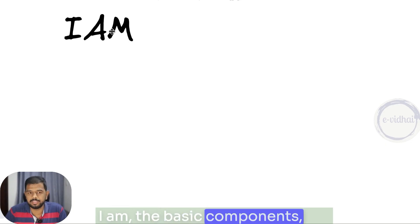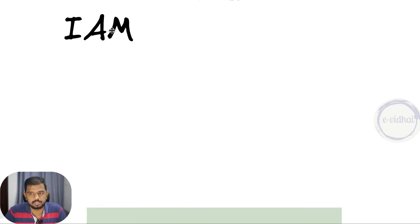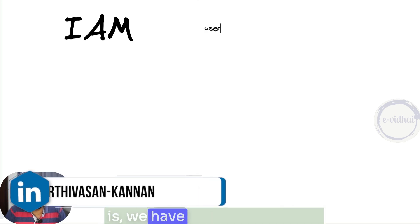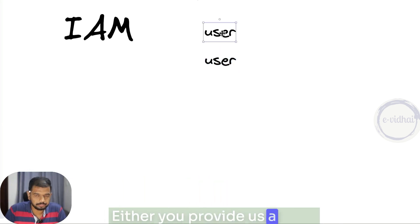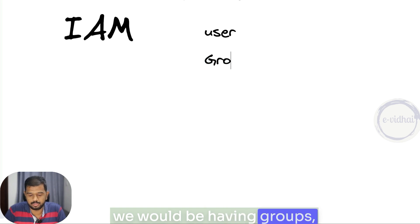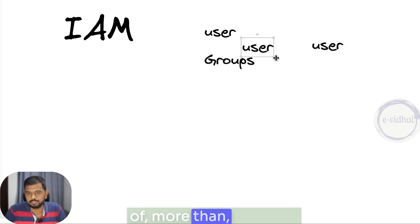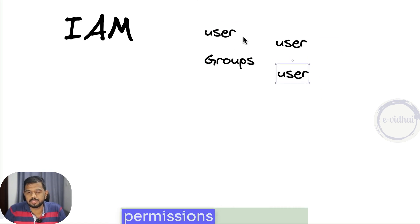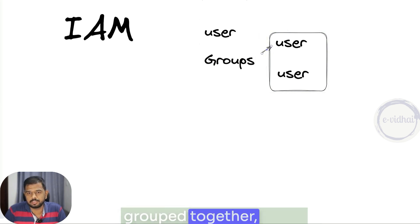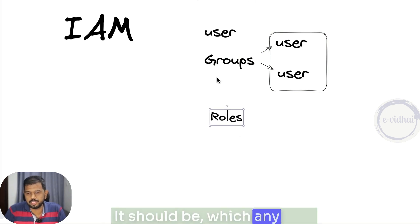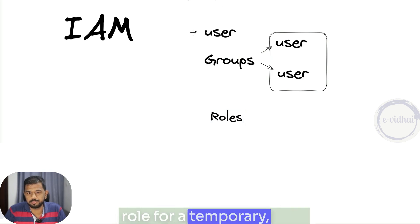Today's session will talk about IAM, the basic components, the major challenges we would see in real time, and troubleshooting steps when it comes to IAM as a service. The common things you would already know: we have a component called the user, which is an individual user where you provide access or permission. You have groups, which consist of more than one user so we can map permissions for the same team. And then you have roles, which any user or group can assume for a temporary period.